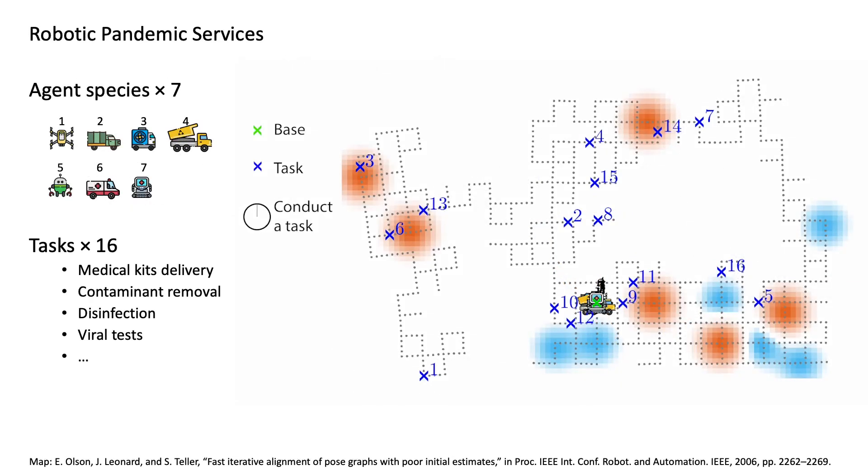Here, we first demonstrate our team planner in a robotic pandemic service example involving seven agent species and 16 heterogeneous tasks in the city. In this example, the city map is overlaid with a cost map. The red regions are risky and with high cost to travel, while the blue regions are safe.